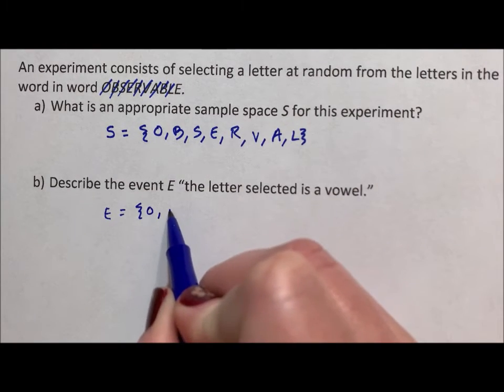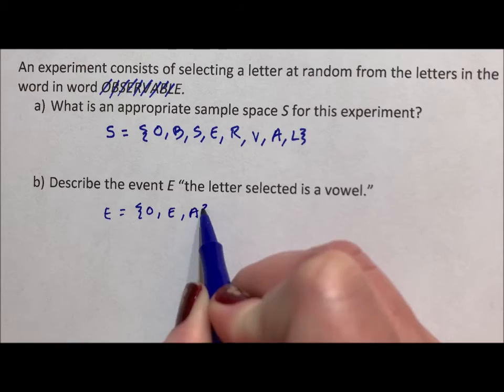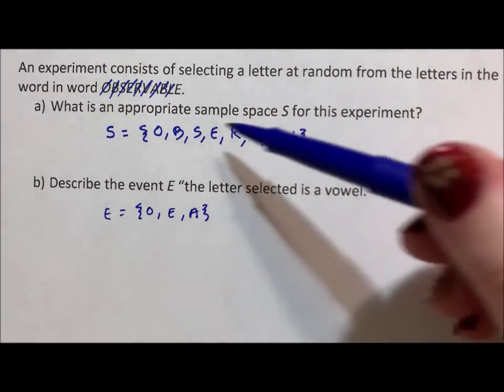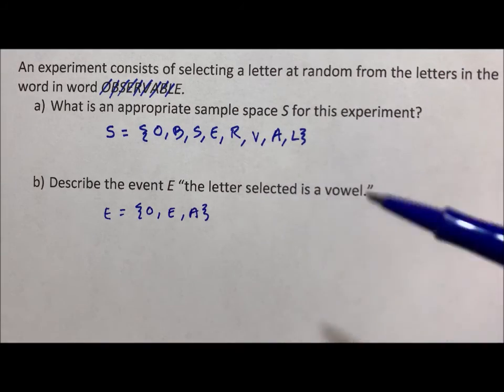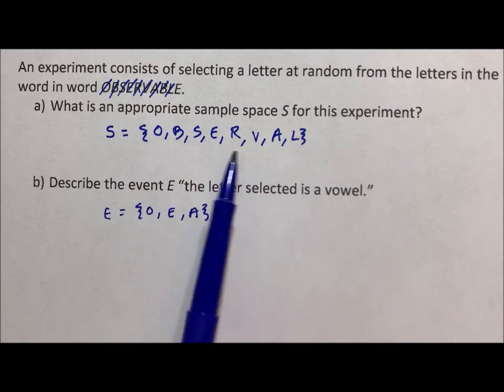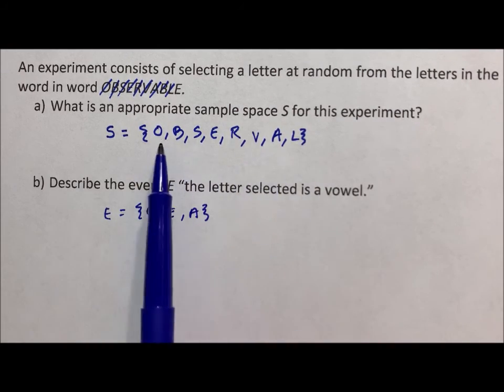So O, E, A. Now it's not A, E, I, O, U because there's no I in these eight letters. There are no U's in these eight letters. It's just the letters in the sample space above.